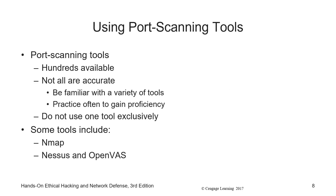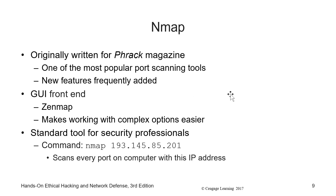There are many port scanning tools available, though not all are equally accurate. Professionally, Nessus — part of Tenable IO's suite — is the best option. OpenVAS is a free alternative. Nmap is one of the most well-known, originally written for Phrack magazine and one of the most popular open source port scanning tools. Nessus is arguably the most popular professional option. There is a GUI front end called Zenmap, but you should be learning the command line where possible.